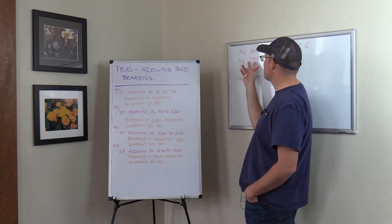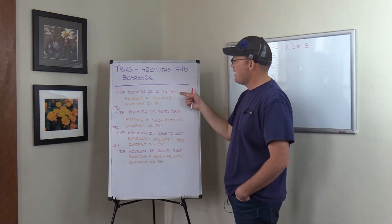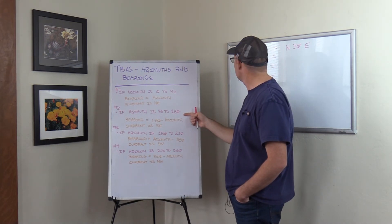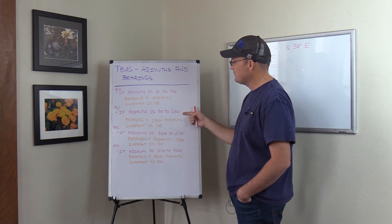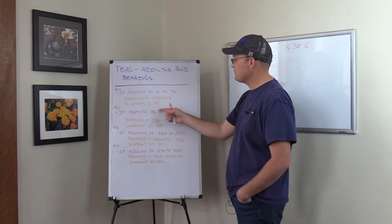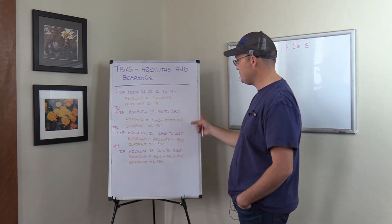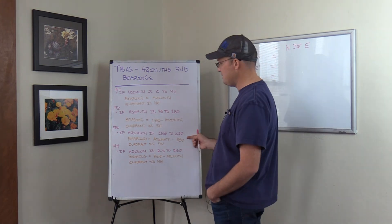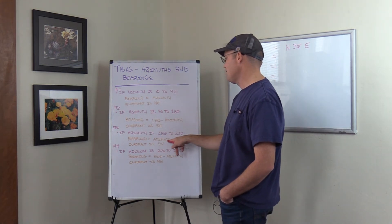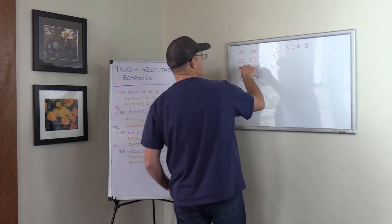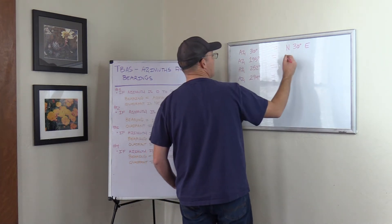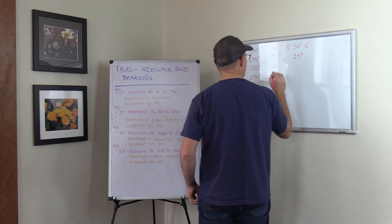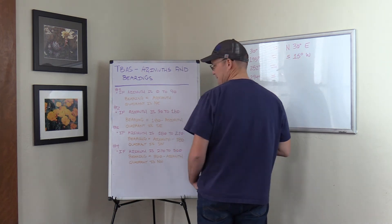Our second azimuth is 195 degrees. It's bigger than 180, so we skip Rules 1 and 2. It's between 180 and 270, so we use Rule 3. The bearing equals the azimuth minus 180 degrees: 195 minus 180 gives us 15 degrees, and the quadrant is southwest. So the bearing is South 15 degrees West.